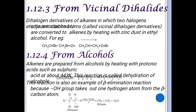The next method is from vicinal dihalides. Vicinal dihalides are compounds having two halogen atoms on adjacent carbons — for example, two bromine atoms on adjacent carbons. When heated with zinc dust in ethyl alcohol, vicinal dihalides give alkenes.